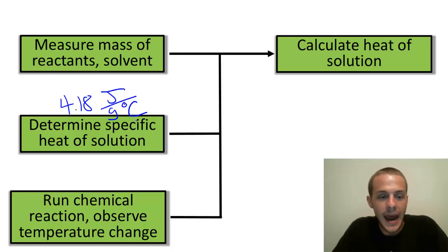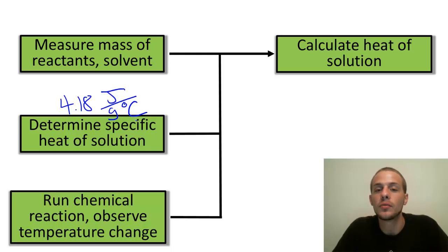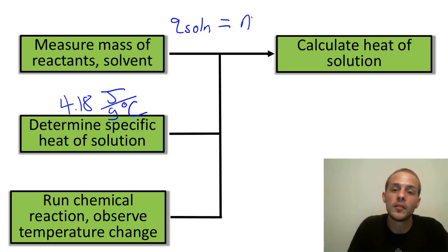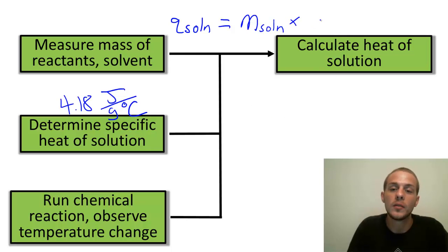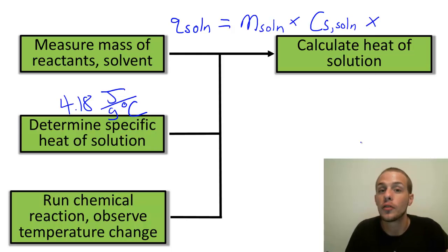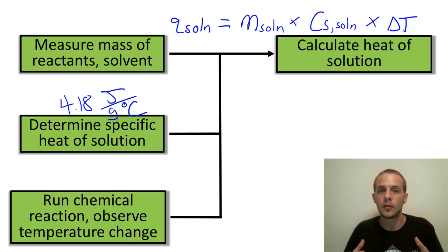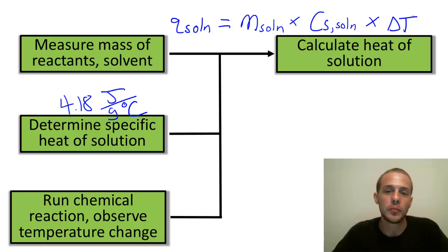For an exothermic reaction, the reactants release heat into the solution as they convert to products, so the solution absorbs that heat. We can calculate how much heat is absorbed by the solution using the formula: q = m_soln × Cs × ΔT, where m_soln is the mass of the solution, Cs is the specific heat of the solution, and ΔT is the change in temperature measured by the thermometer. This formula gives the amount of heat absorbed by the solution from the reactants.